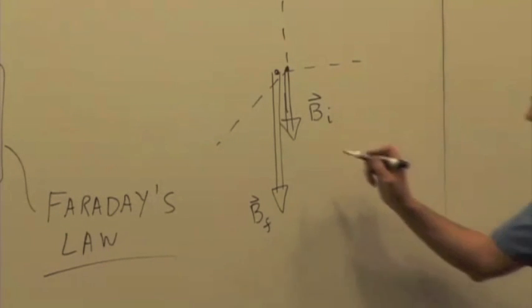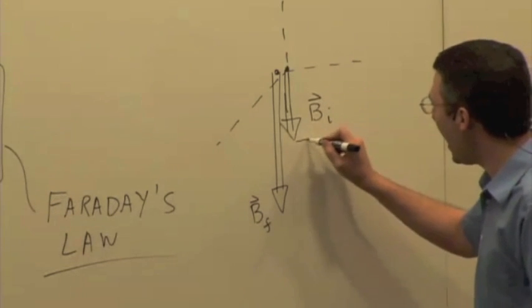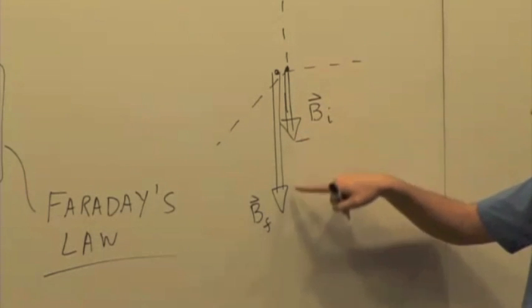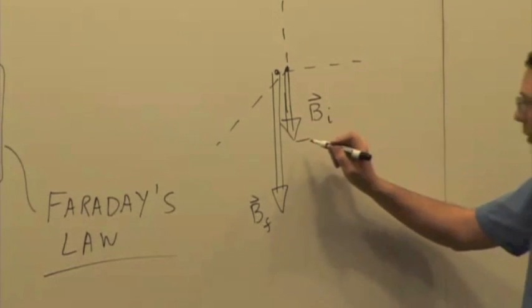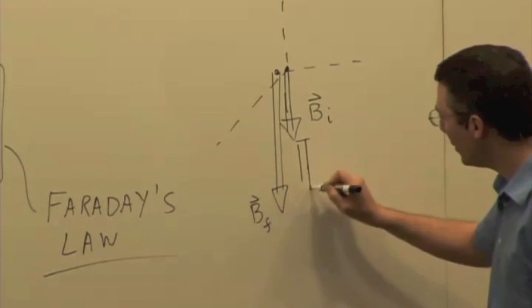What's the direction of delta B? Down. It's got to be down. Negative Y direction, right? If I have a vector pointing downward and I want to make it bigger, I have to add to it a downward vector. So that's delta B.